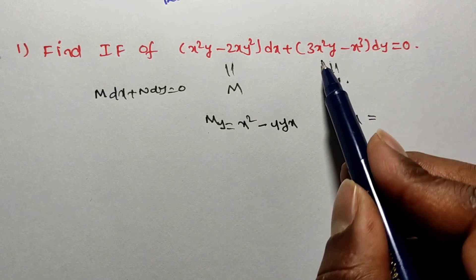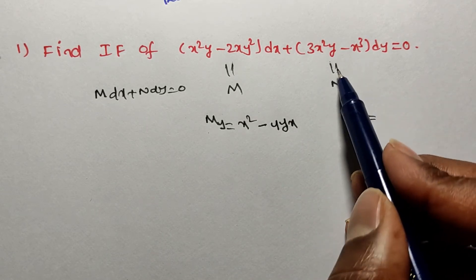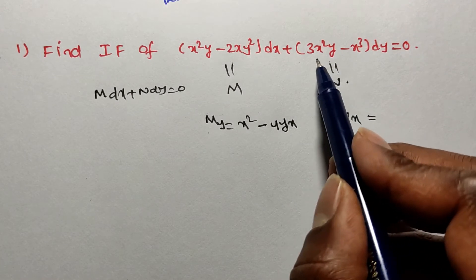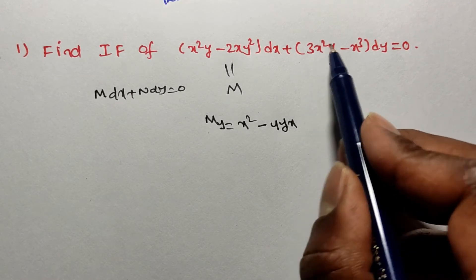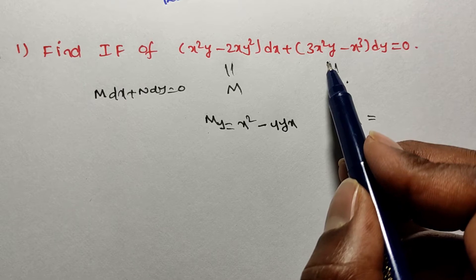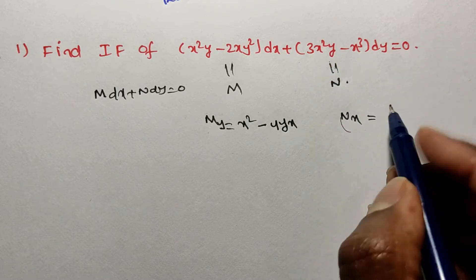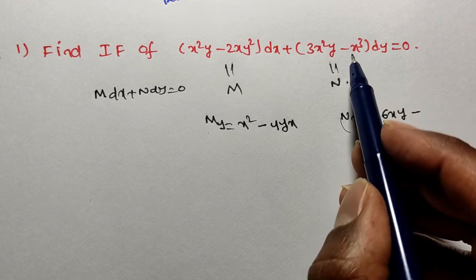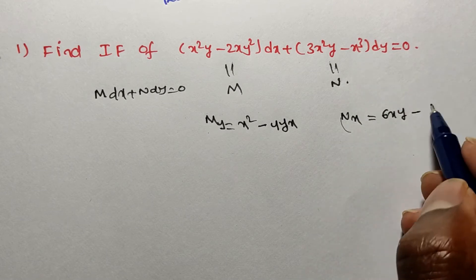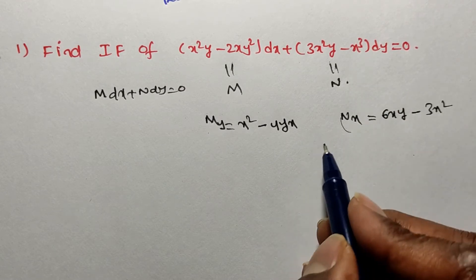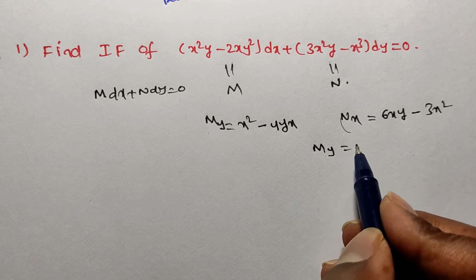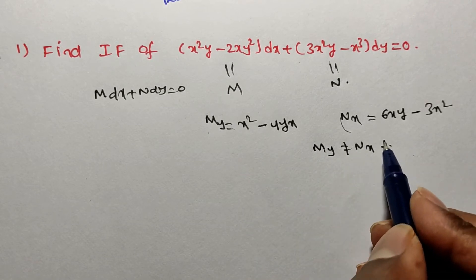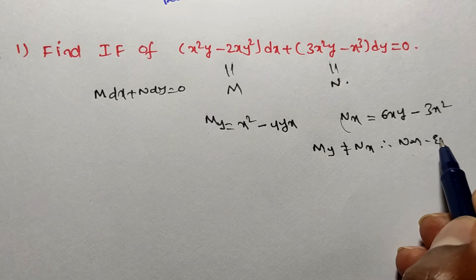Now dou N by dou x: while differentiating N partially with respect to x, we treat all other variables as constants. So 3y is a constant, x squared derivative is 2x, giving 6xy. Then x cubed derivative is 3x squared. Since dou M by dou y is not equal to dou N by dou x, this is a non-exact differential equation.